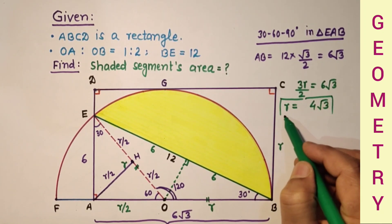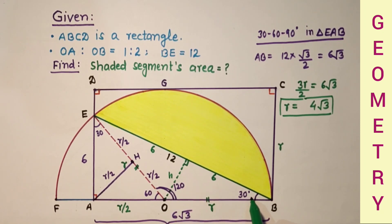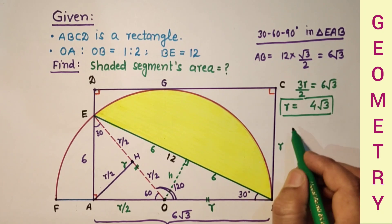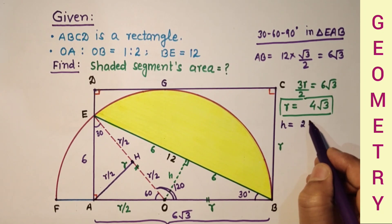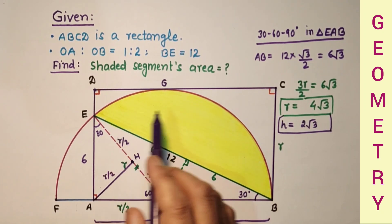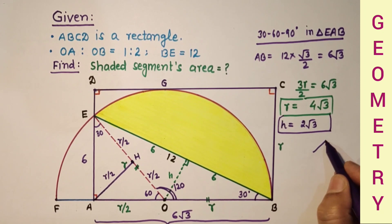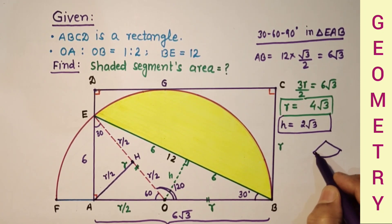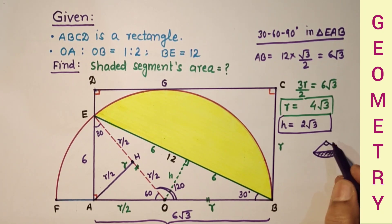The radius of the semicircle is 4 root 3 units. Now to get the height: the height is the side opposite to 30 degrees. In a 30-60-90 triangle, the side opposite 30 degrees is half the hypotenuse. So height equals R by 2, and since R is 4 root 3, height equals 2 root 3. The shaded area equals the sector's area minus the triangle's area, and the central angle is 120 degrees.